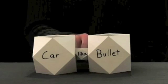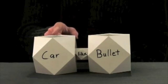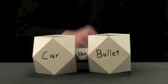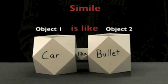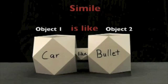If we change the interrelationship to like to form the sentence the car is like a bullet, we are making a simile, a statement that points out how two things are similar in some way.